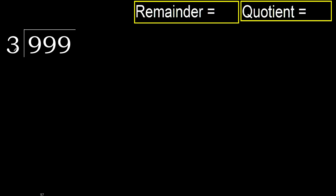999 divided by 3. Starting with 9: 3 multiplied by which number is nearest to 9 but not greater? 3 multiplied by 4 is 12, which is greater. 3 multiplied by 3 is 9, which is not greater. Subtract.